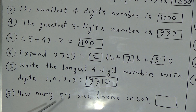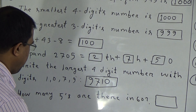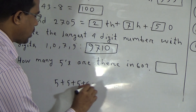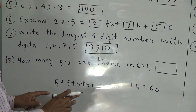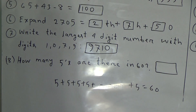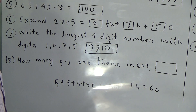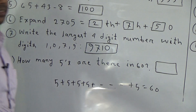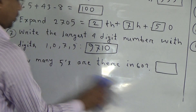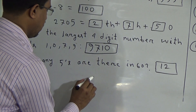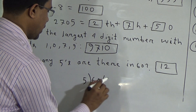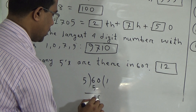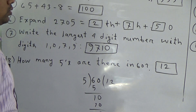Eighth question: how many 5s are there in 60? That means if we add how many 5s, we can get 60. If we divide 60 by 5, then we can get the answer easily — 5 twelves are 60. That means if we add a total of twelve 5s, we get 60. So the answer will be 12.